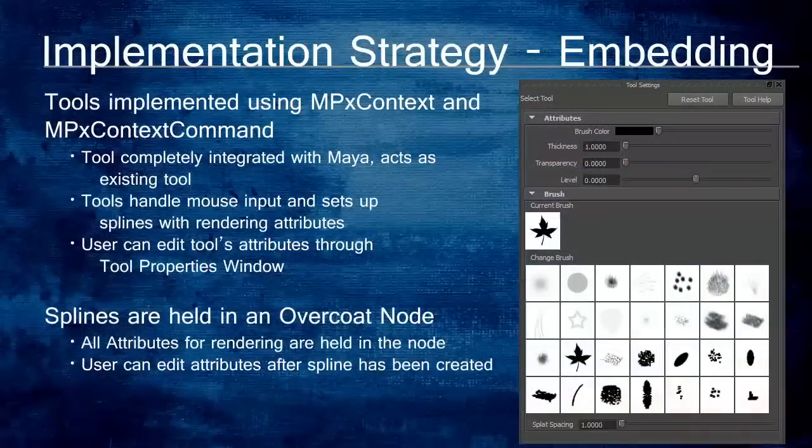The stroke embedding tools were written in C++ using the MPXContext and MPXContextCommand classes from the Maya API. These tools are completely integrated into Maya and act exactly the same as any other tool. The tool handles mouse input from any 3D viewer in Maya and sets up the splines as needed for rendering. The tools also call OpenGL drawing calls in order to give the artist better feedback on how the spline is being drawn. The user can edit the tool's attributes like any other tool in Maya by double-clicking and opening the tool properties window. The user can alter the parameters of the tool to determine how each spline will be rendered.